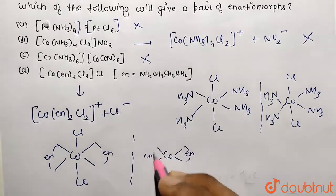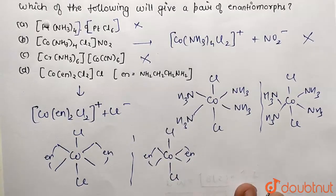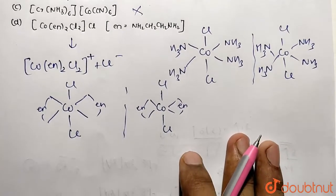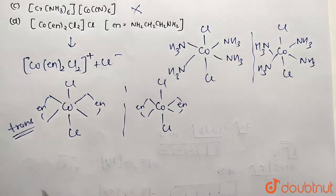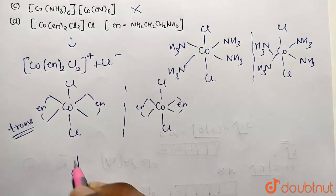trans form is not going to show optical activity. But we are going to draw the cis form. So let's also check for the cis form. This one was trans form. Now we are taking the cis. So cis orientation means two groups are going to be exactly adjacent.